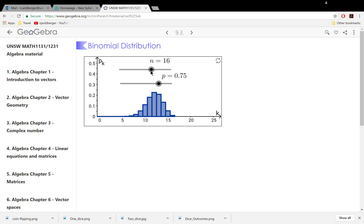We're still tossing a coin 16 times. But now the chance of getting a head is three quarters. The various likely outcomes in terms of the number of heads are recorded here.